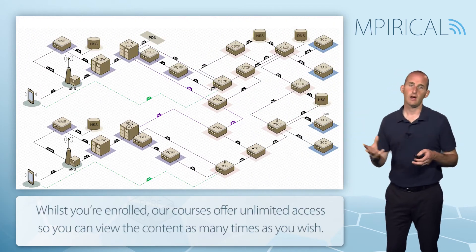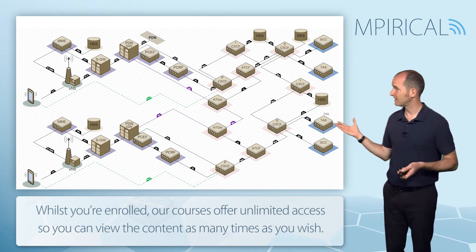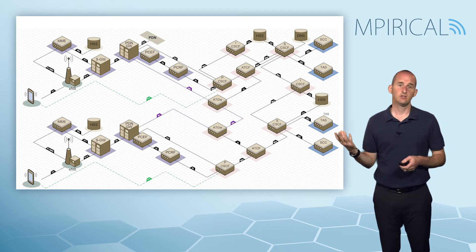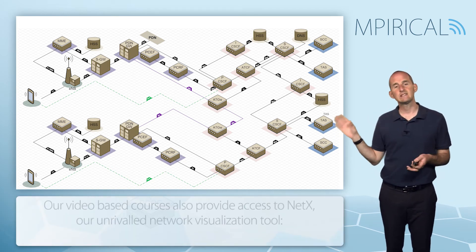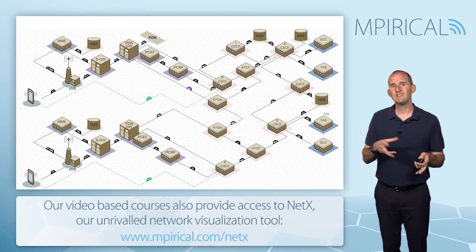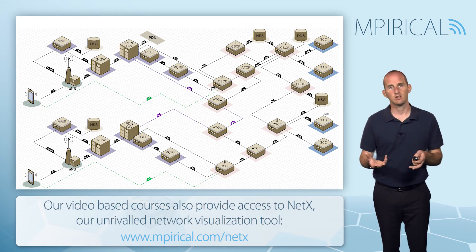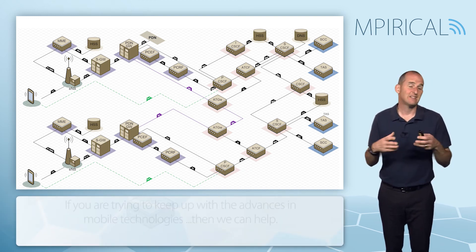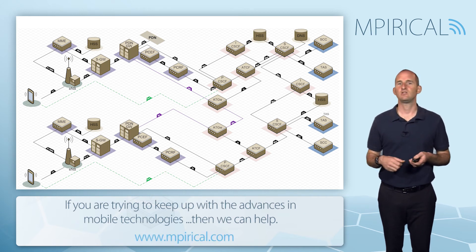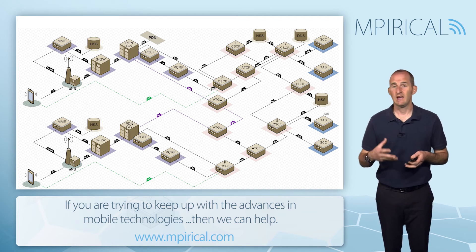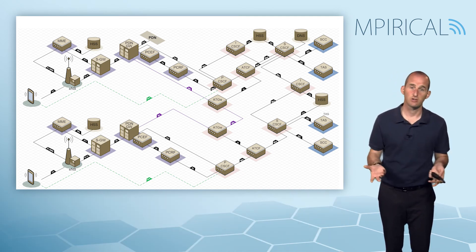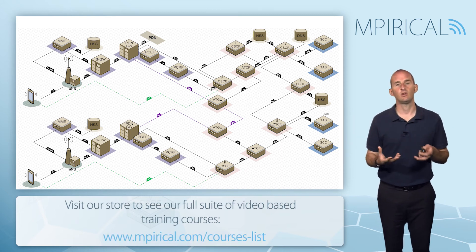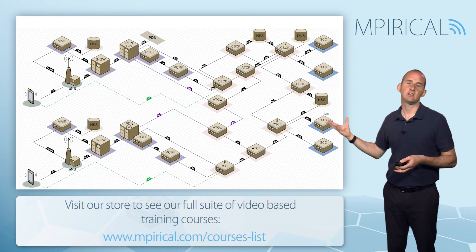This diagram could apply to a network-to-network call — the kind of architecture you would see between two different VoLTE network providers — but it could also easily apply to calls taking place on the same network, where you would still need the same architecture. Things get more complex when the calling and called party start sharing nodes, such as being in the same cell and using the same eNodeB, serving gateway, PDN gateway, proxy, and policy and charging control elements. This is why end-to-end signaling flows for VoLTE are sometimes not as clear-cut as this architectural diagram.